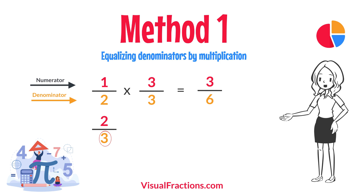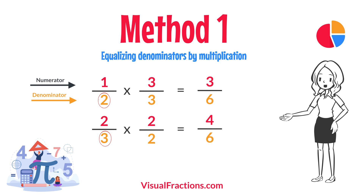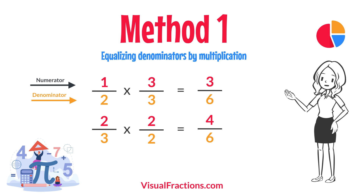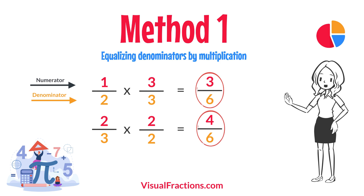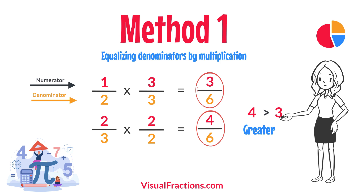For two thirds, multiply both the numerator and the denominator by two — the denominator of one half. This results in four sixths. Now, with both fractions expressed with a denominator of six, we can easily compare them. Comparing these, four sixths is greater than three sixths, so two thirds is the larger fraction.